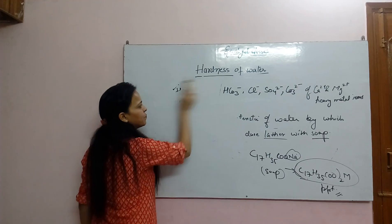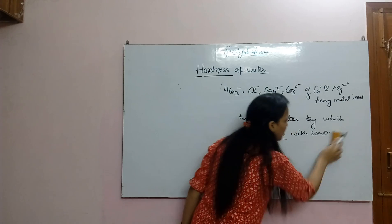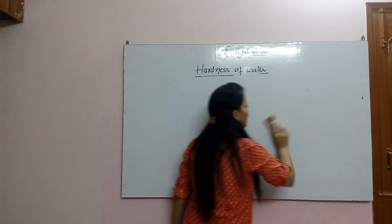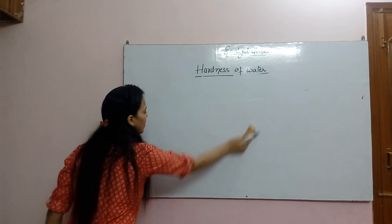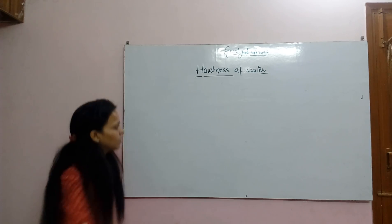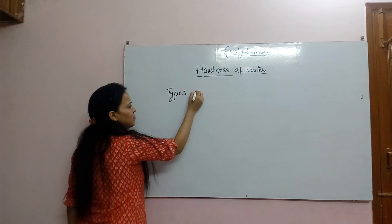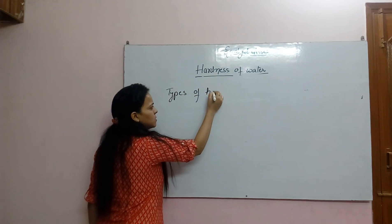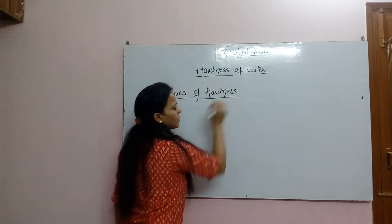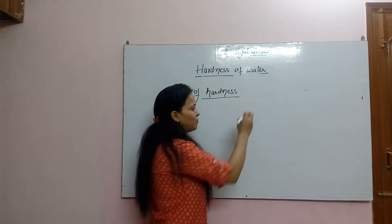अब हम देखते हैं कि पानी hard है और hardness वो property है — that is called hardness of water. Next, हम देखते हैं types of hardness. There are two types of hardness.